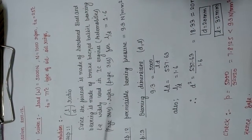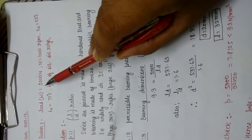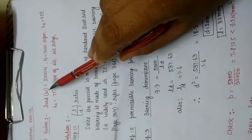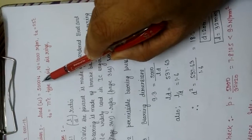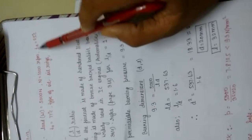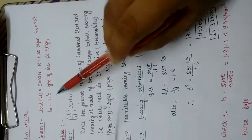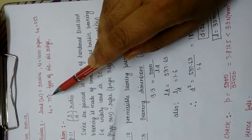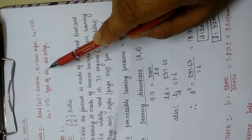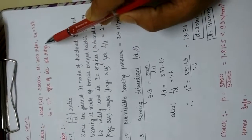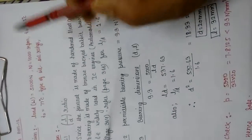I am here to discuss a numerical on journal bearing, also called sliding contact bearing. The given data is: radial load = 500,000 Newton, RPM = 1000, atmospheric temperature = 25 degrees centigrade, and T0 (oil film temperature) = 77 degrees. A hint is given regarding the type of oil — an oil ring type, which is used for lubricating purposes.